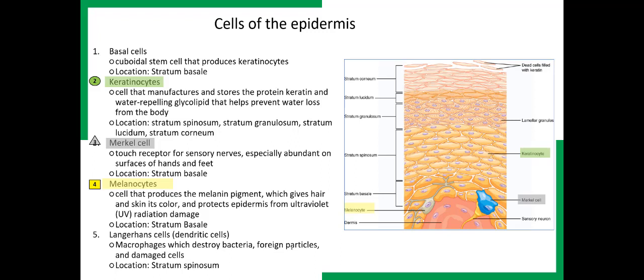When we look at the epidermis, we're next going to talk about the cells found within it. There are five different cell types, and there are also five different layers. The first type of cell is the basal cells. They're located in the bottom or deepest layer of the epidermis — the stratum basale. Basal cells are stem cells that produce keratinocytes.